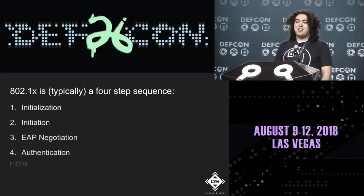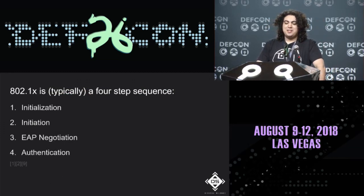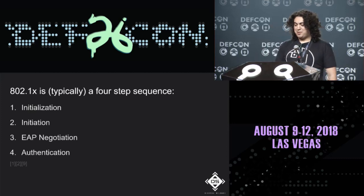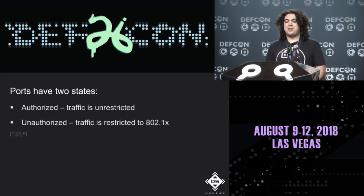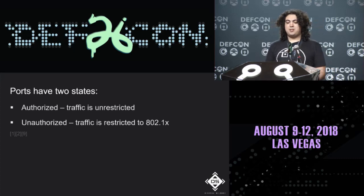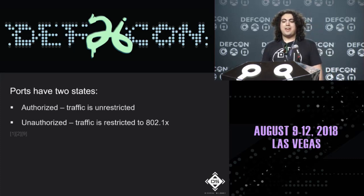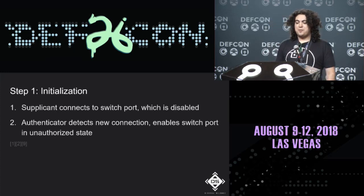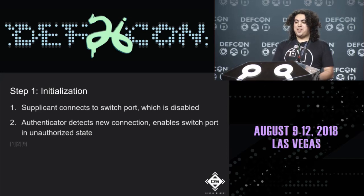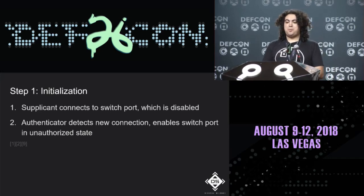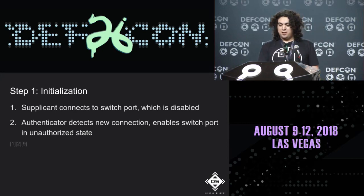802.1X is typically a four-step process: initialization, initiation, EAP negotiation, and authentication. When connecting to a switch port protected by 802.1X, it will be in one of two states: authorized, where traffic is unrestricted, or unauthorized, where traffic is restricted to only 802.1X traffic. During initialization, the supplicant connects to the switch port and starts in a disabled state; the authenticator detects the new connection and enables the port in an unauthorized state.